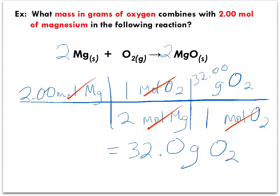Our final answer is 32.0 grams of oxygen. Our answer is expressed to three significant digits to match the significant digits of the given information.